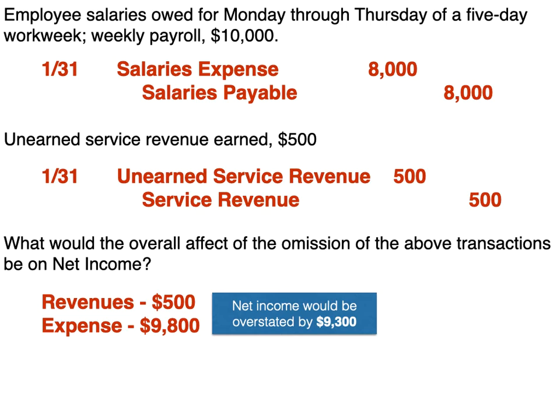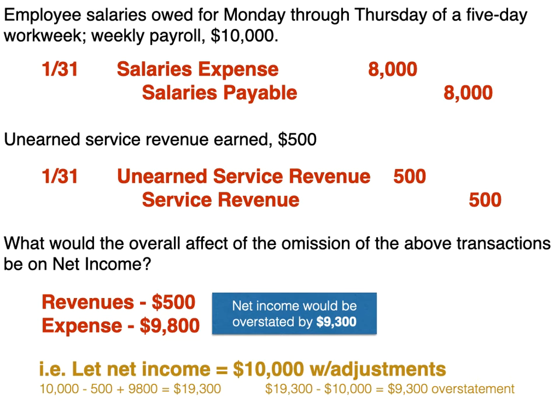For example, let's say net income with the adjustments was $10,000. If we didn't make the adjustments: we didn't record the $500 revenue, which reduces net income, and we didn't record the expenses, which increases net income. So net income would have been $19,300 without the adjustments. $19,300 minus the $10,000 true net income gives us that $9,300 overstatement.